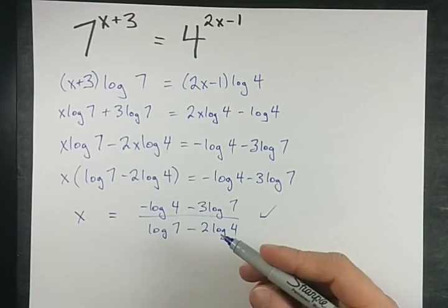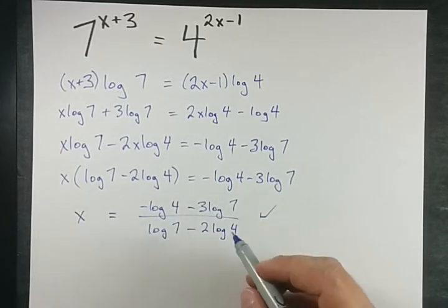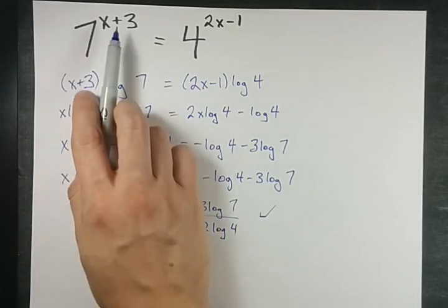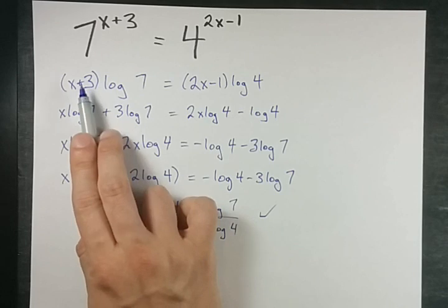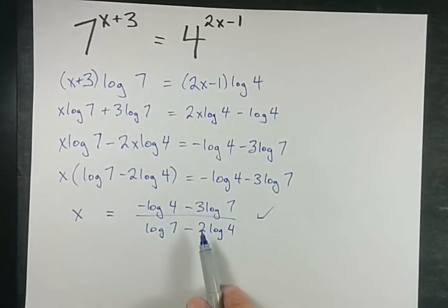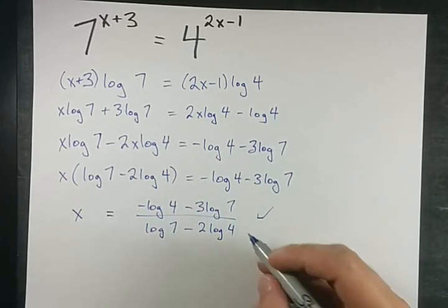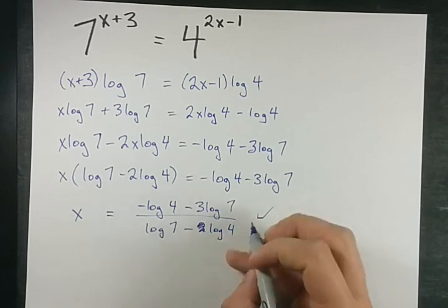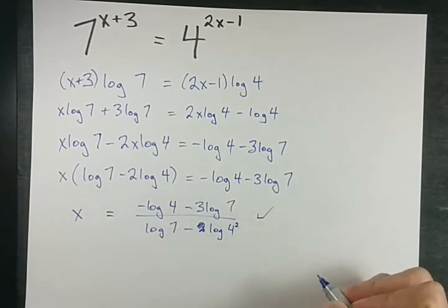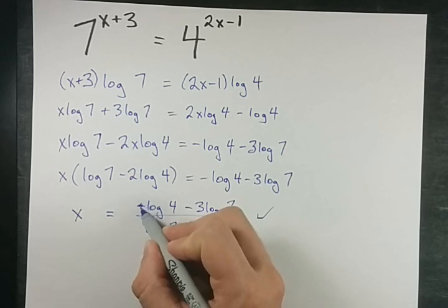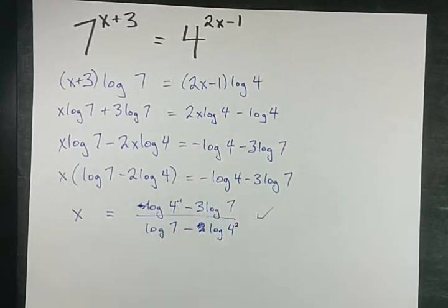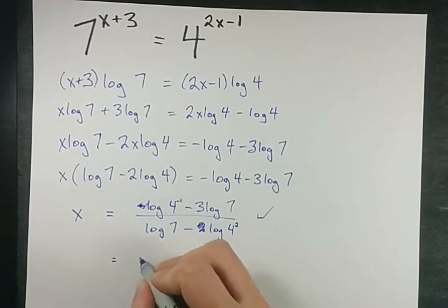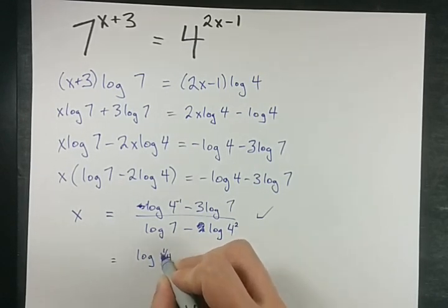I will show you what I would do here. Remember that rule where if you're taking the log of a number with an exponent, you can bring that exponent down? Well, you can do the reverse and bring the number in front of the log up. So I'm going to get rid of this 2, make it squared up here, and I'm going to get rid of this negative and put it up here. Pretty sweet. That leaves me with the log of 1 quarter.